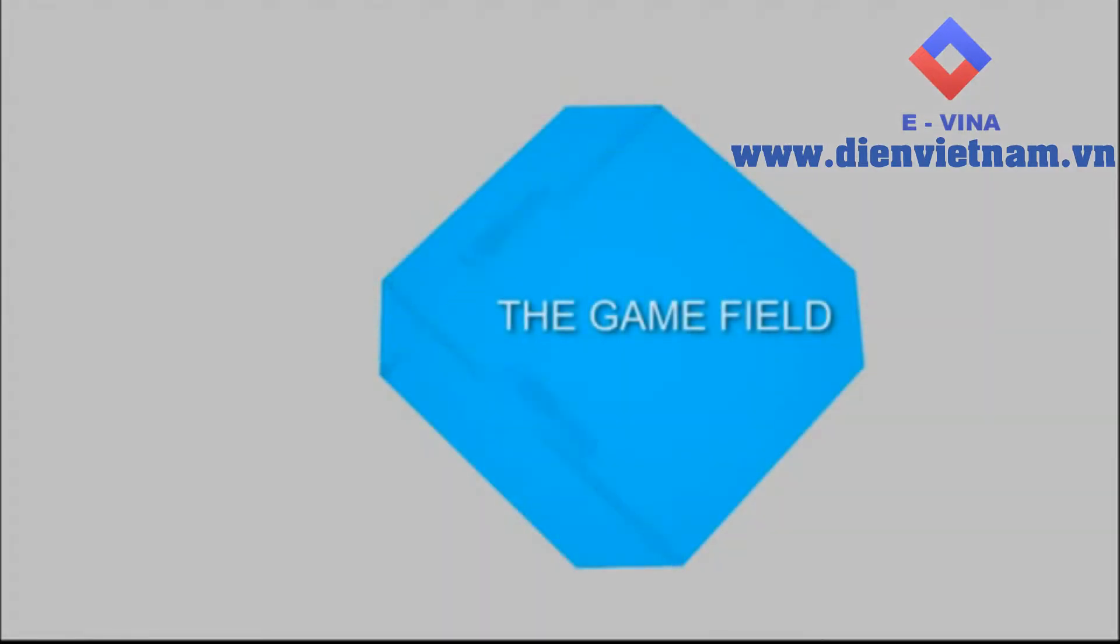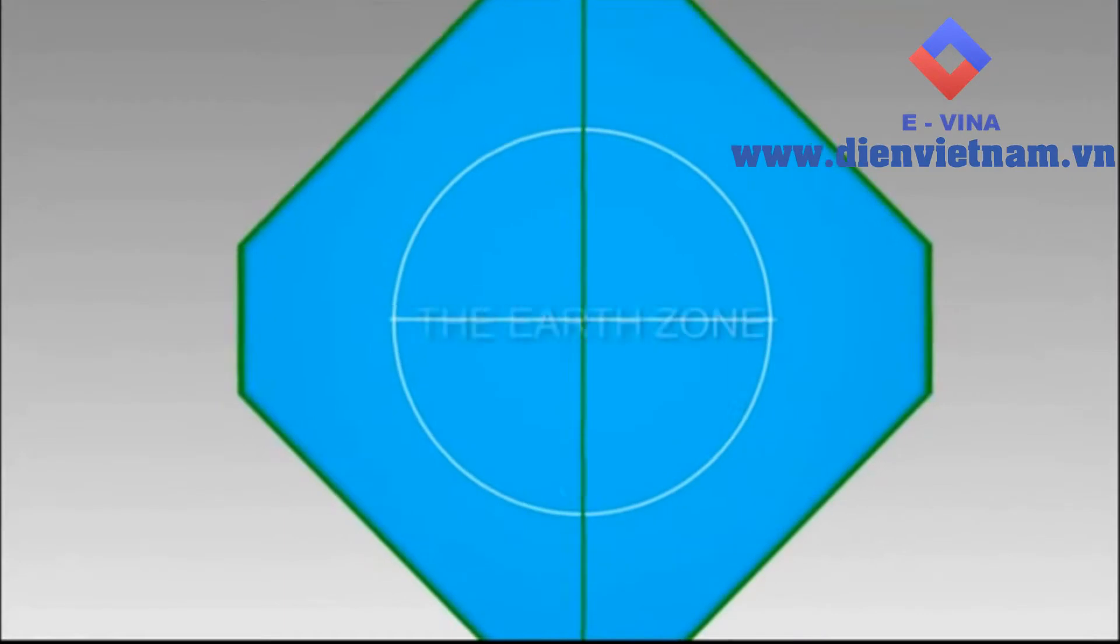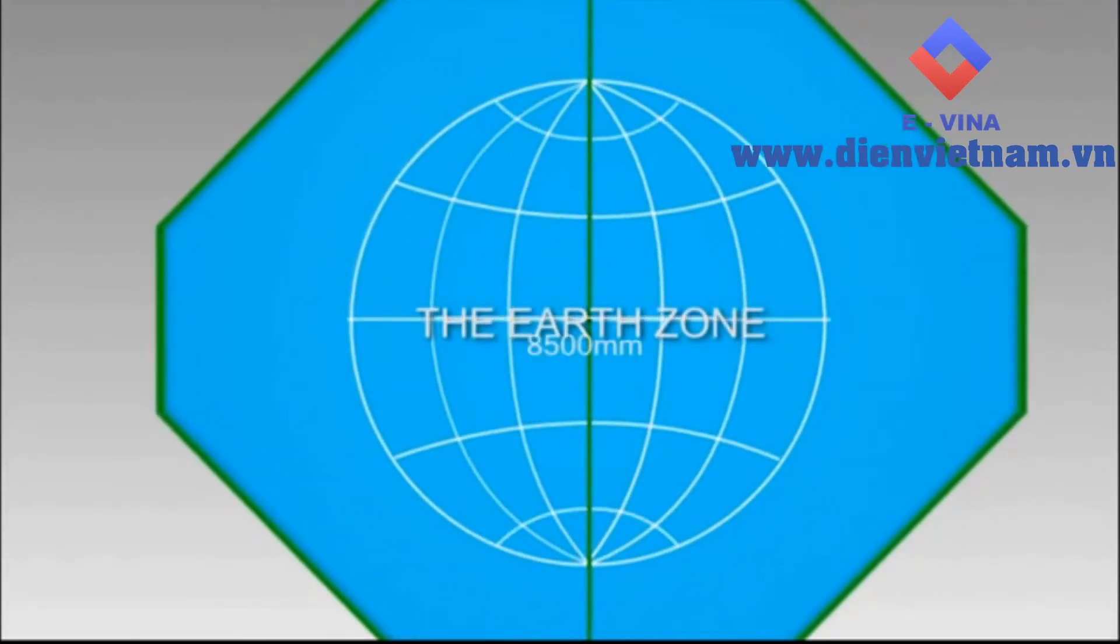The game field consists of an area having the dimension of 13 meters by 13 meters, divided equally by a fence along the prime meridian. The Earth zone is in sphere shape with diameter of 8.5 meters, marked by wide guidelines representing the meridian and the parallel.